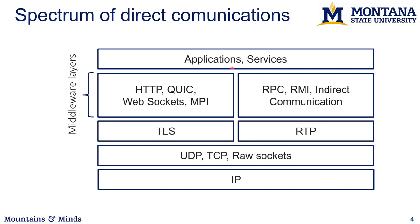Looking at the spectrum of direct communications: at the top you have applications and services, then middle layers that wrap the transfer protocol in extra functionality, then security layers and maybe real-time guarantees in the case of real-time transfer protocol, and then the underlying transport protocols such as UDP, TCP, or raw sockets, and then IP. All these different things work together to provide transport layer functionality. Technically this is the transport layer, but from the application perspective you can think of the upper layers as part of the transport layer in some situations.